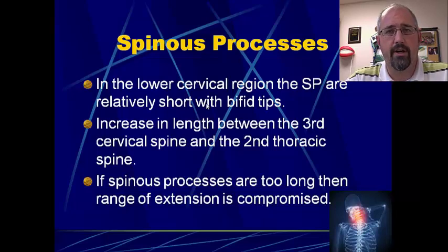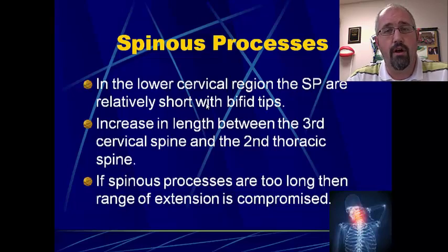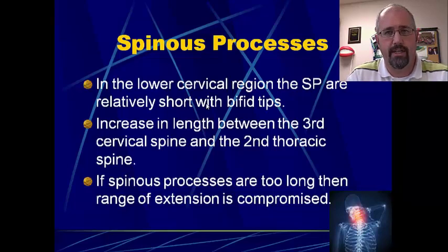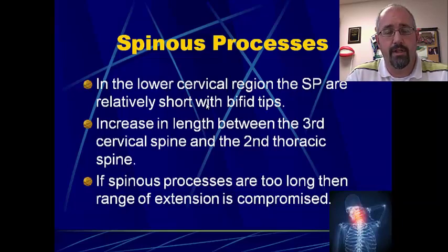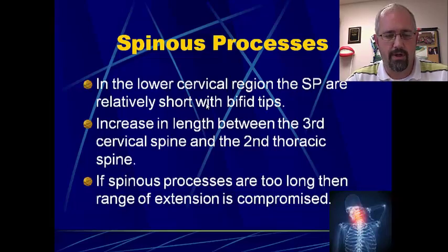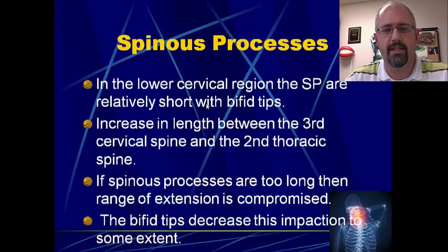One issue that can occur just because of the shape of the bones is that if the spinous processes are too long, the amount of extension available will be compromised because those spinous processes will impact one another and bang into each other as you take the neck back into full extension. So as your patients come in and you look at their available range of motion, sometimes when you get the x-rays you want to look and see whether they have excessively long spinous processes and whether they've always had a decrease in that range of extension.